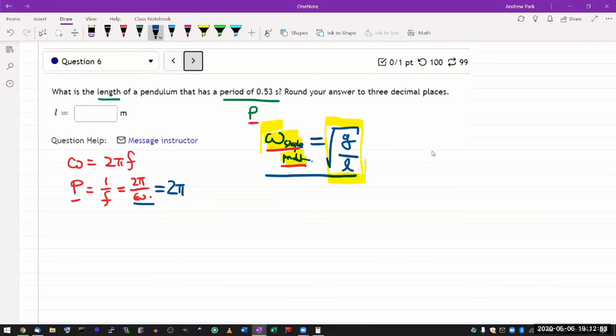I have period in terms of angular frequency, so let me write this out: 2π divided by ω. Let me multiply by reciprocal of that: 2π times the square root of length of the pendulum divided by g. Even though the question doesn't say it, I'm going to assume we're on Earth, so g is 9.8 meters per second squared.